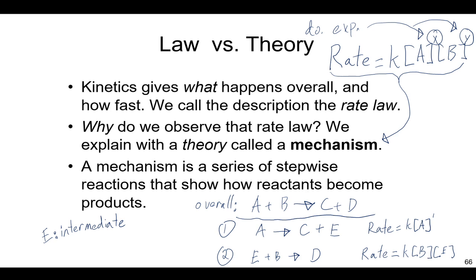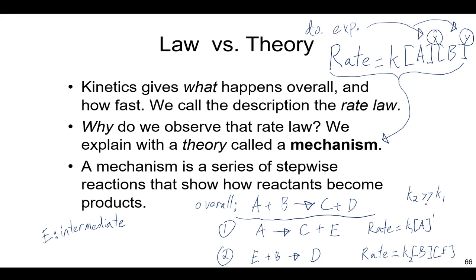A rate law can be written for each mechanistic step, and the rate law will point to what is the slowest step. If step one is slow and step two is fast, we label them K1 and K2. If step one is really slow and two is really fast, then K2 is much greater than K1. The overall reaction cannot be faster than the slowest step, so the length of time is limited by step one. As soon as step one happens, step two is off and running. This lets us identify the rate determining step and theorize mechanistic steps based on the experimentally derived rate of reaction.